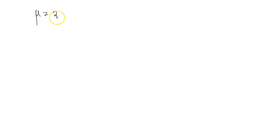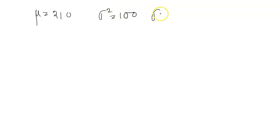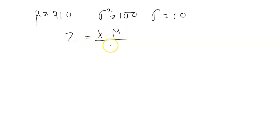Hello everyone. Here mu is equal to 210, sigma squared is equal to 100, and sigma is equal to 10. So z is equal to x minus mu by sigma.